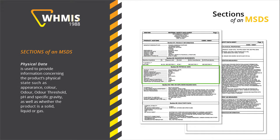The Physical Data section is used to provide information concerning the product's physical state such as appearance, color, odor, odor threshold, pH and specific gravity, as well as whether the product is a solid, liquid, or gas.